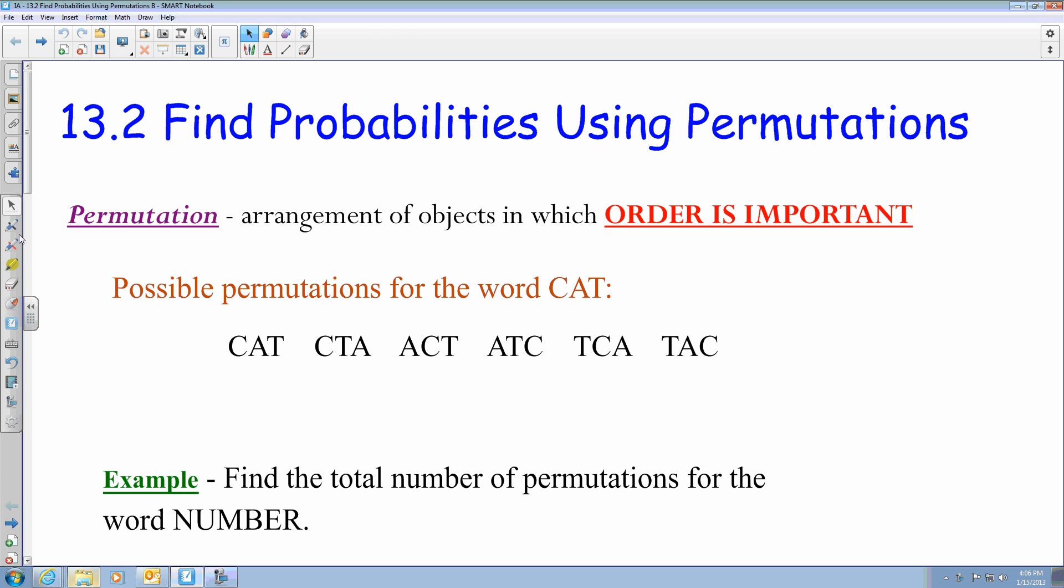Alright. So we're in section 13.2, and we are trying to find probability using permutations. Permutation is defined as an arrangement of objects in which order is important.